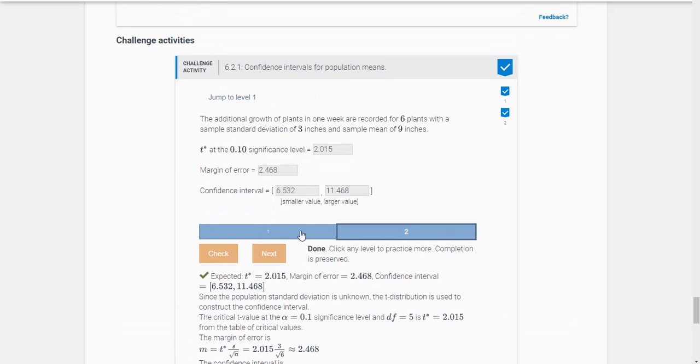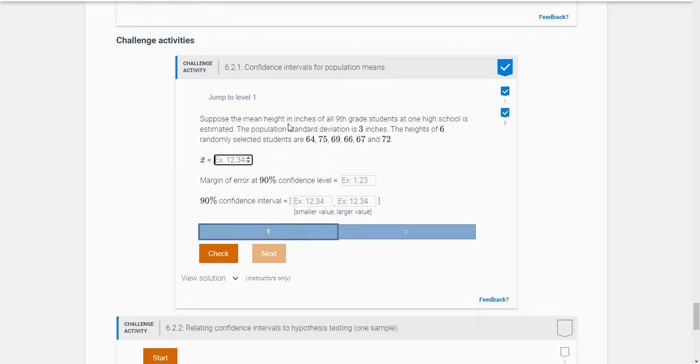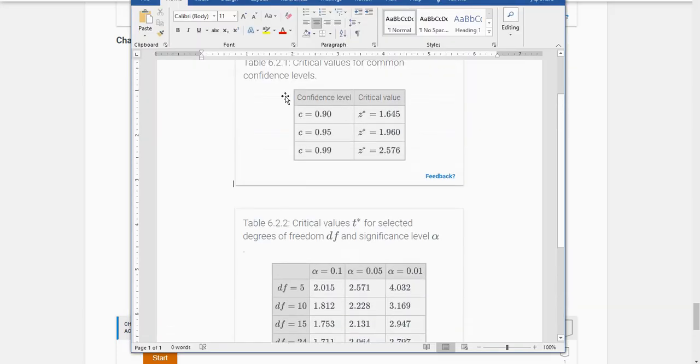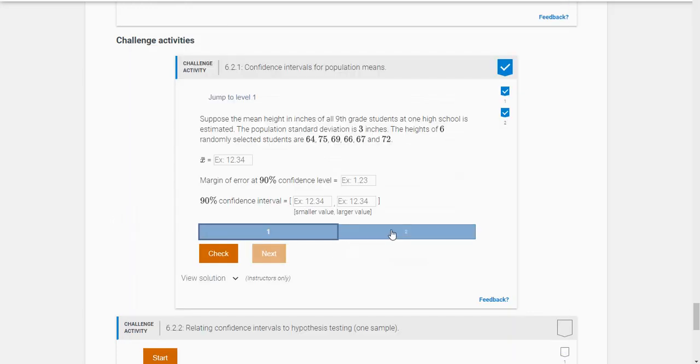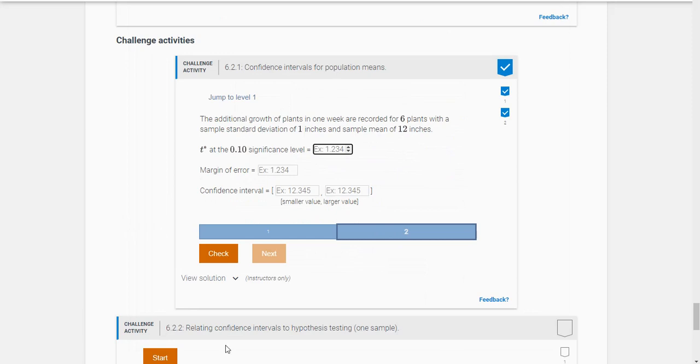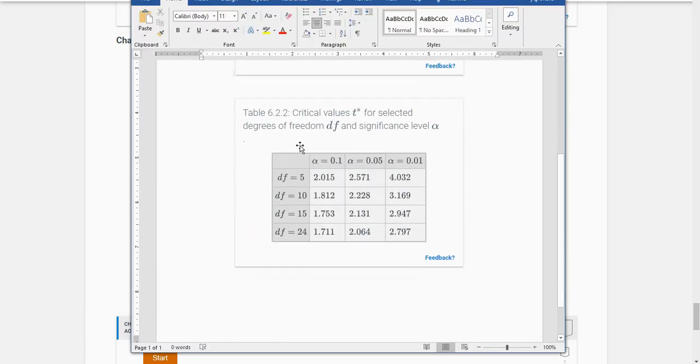So just as a reminder, whenever you're given the population standard deviation, you're going to use this first chart. And whenever you're given the sample standard deviation like you were here, you're going to use this chart here. So make sure you apply the right chart.